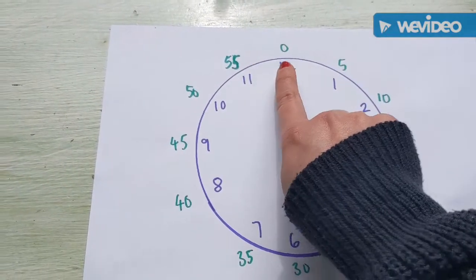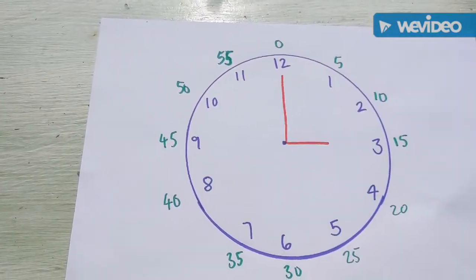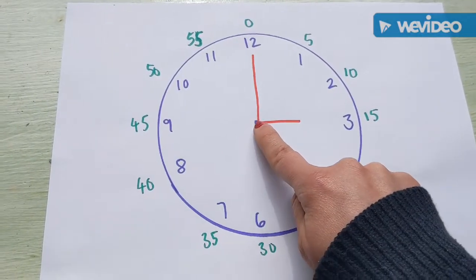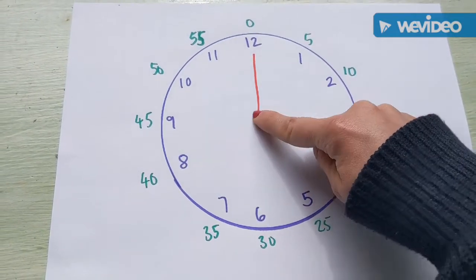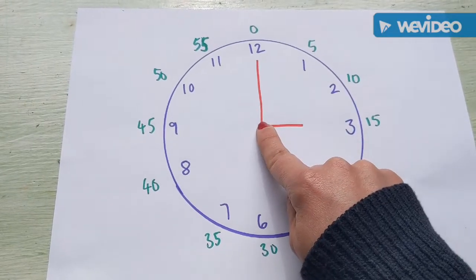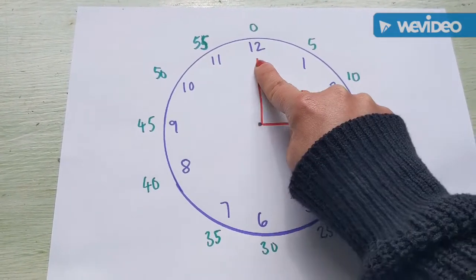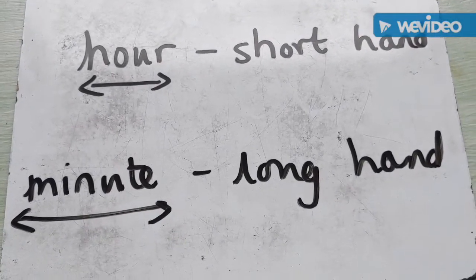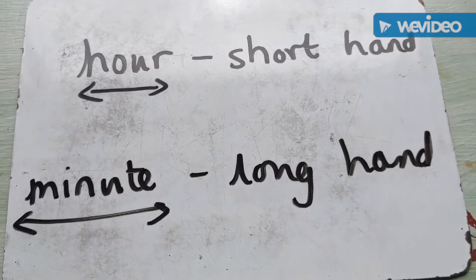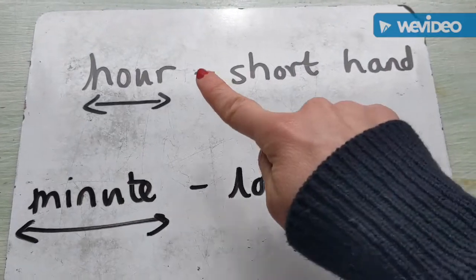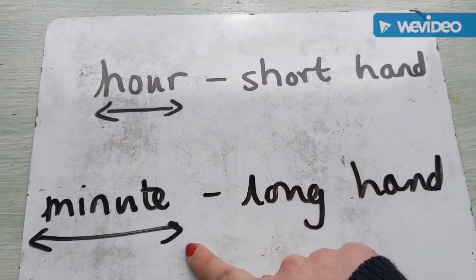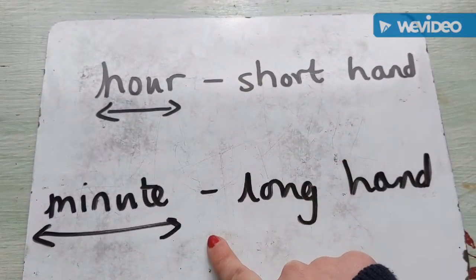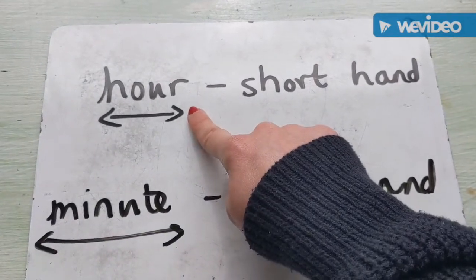Now let's think about the hands. We have a short hand - this is the shorter hand here - which is the hour hand. And we have a long hand which is the minute hand. It's really important to remember that the short hand is the hour hand and the long hand is the minute hand. Here's a way to remember: the word 'hour' is shorter than the word 'minute', and that can remind us that the hour hand is shorter than the minute hand.